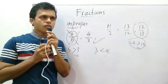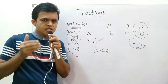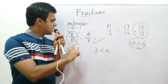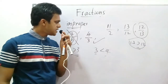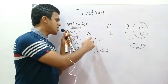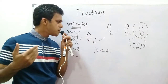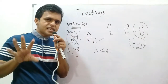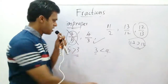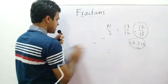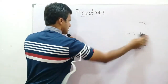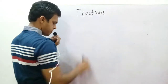So in a certain fraction, if the digit in the denominator is less than the digit in the numerator, then that is an improper fraction. Now we have understood what an improper fraction is.